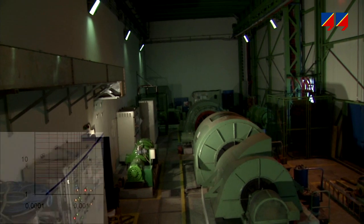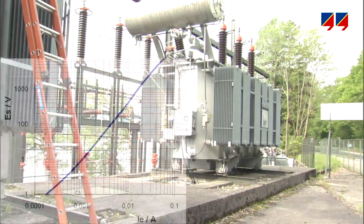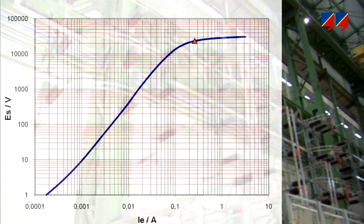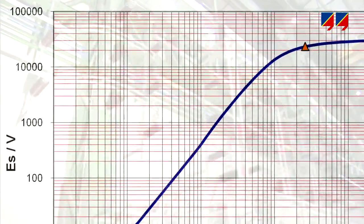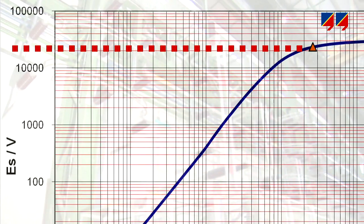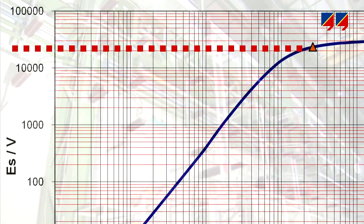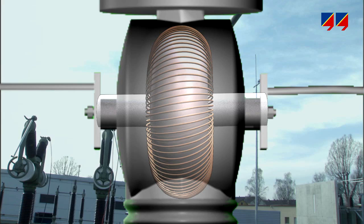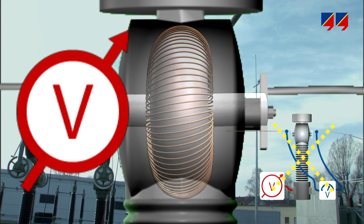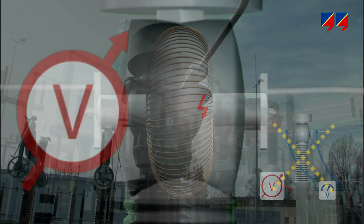In generator, transformer, or bus bar differential protection systems, CTs with knee point voltages of several thousand volts are used. These CTs cannot be tested, since applying more than 4 kV to the CT's secondary winding would damage its insulation.